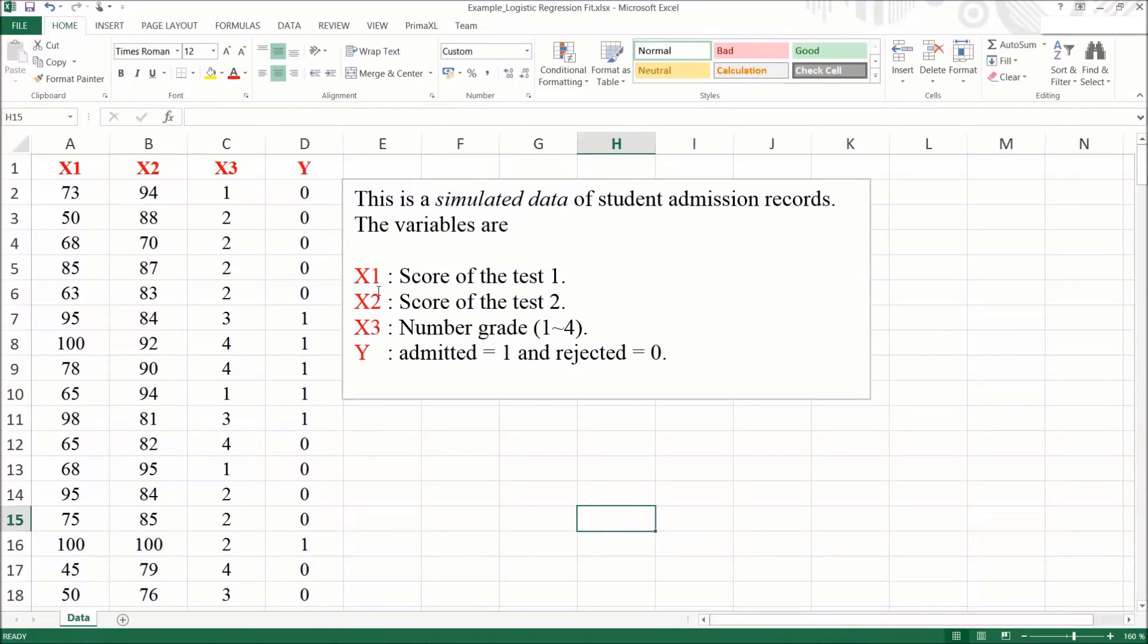x1 is the score of test 1. x2 is the score of test 2. x3 is the number grade. y is the admission result. If the student was admitted, we have value 1. If the student was rejected, we have value 0.